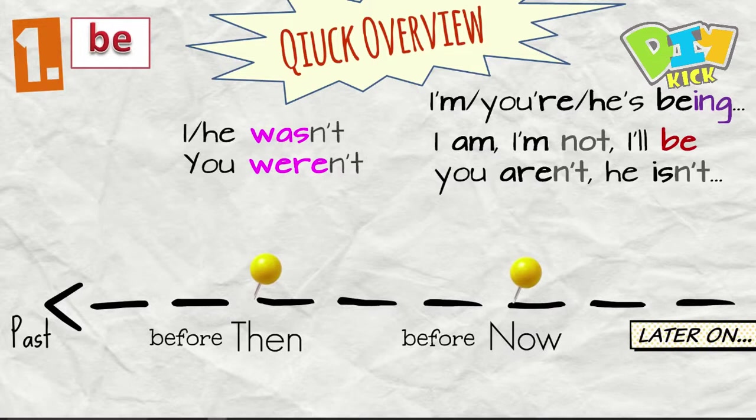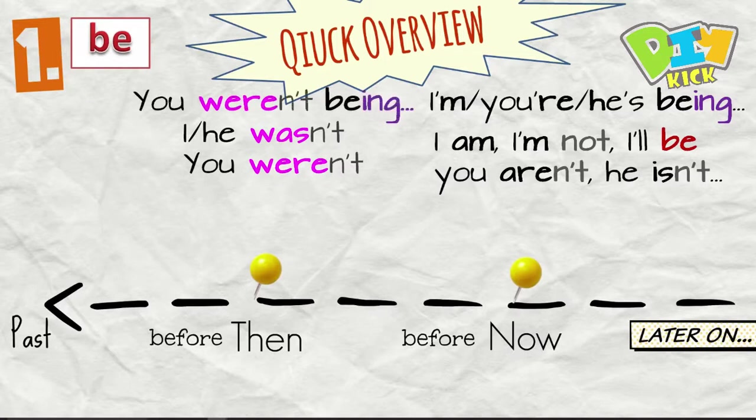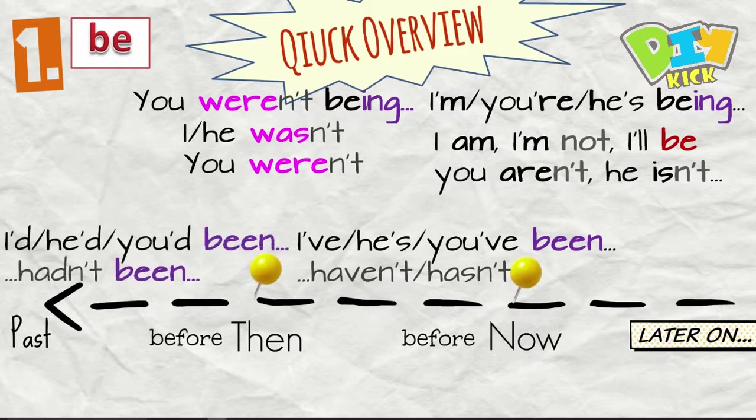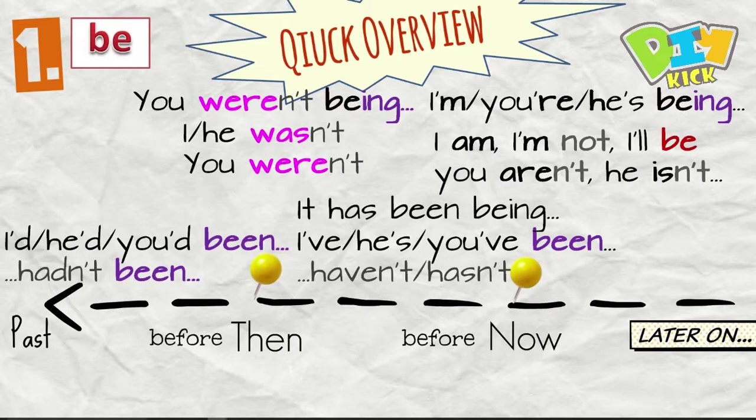We can say you were being or you weren't being. Then we have I've been, he's been, you've been. Or the negative I haven't, hasn't been. And I'd been, he'd been, you'd been. And the negative hadn't been. We also have the form, for example, we say it has been being or I'd been being. But these are not very common. Still we have to mention them here.